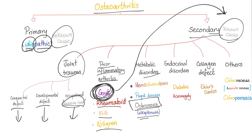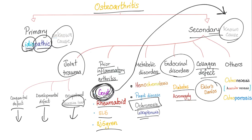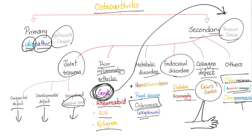Alkaptonuria involves homogentisic acid oxidase deficiency — homogentisic acid accumulates in connective tissue causing darkening and hyperpigmentation, even resulting in a black nose. This was first described by Rudolf Virchow, who also described Virchow's triad of hypercoagulability, blood stasis, and endothelial damage, and was the first to name leukemia. Additional secondary causes include endocrine disorders like diabetes and acromegaly, collagen defects like Ehlers-Danlos syndrome, osteonecrosis (avascular necrosis), and osteoporosis.